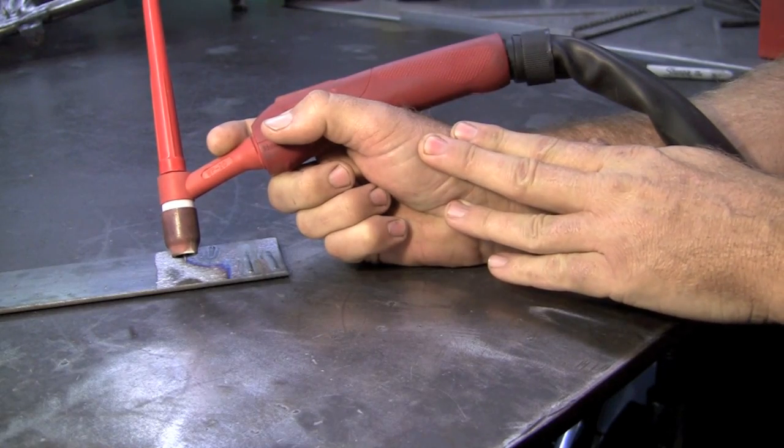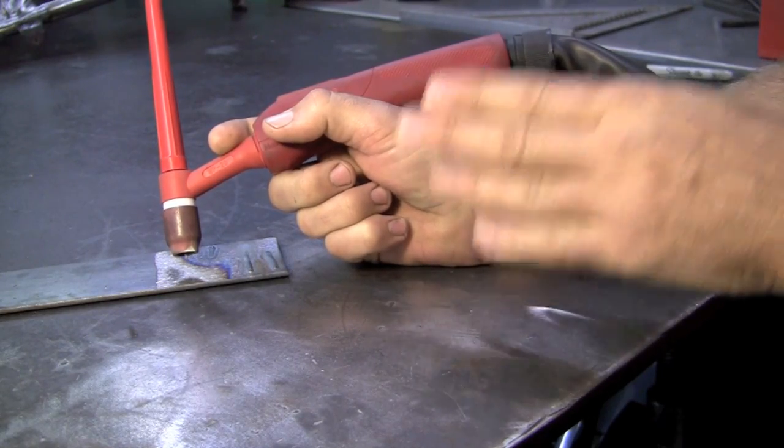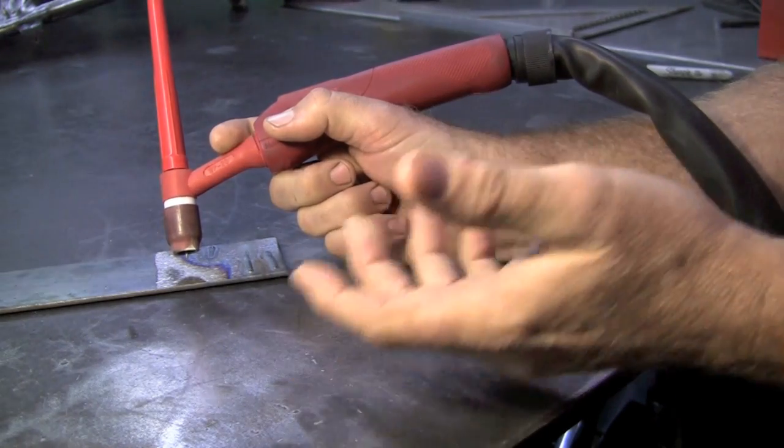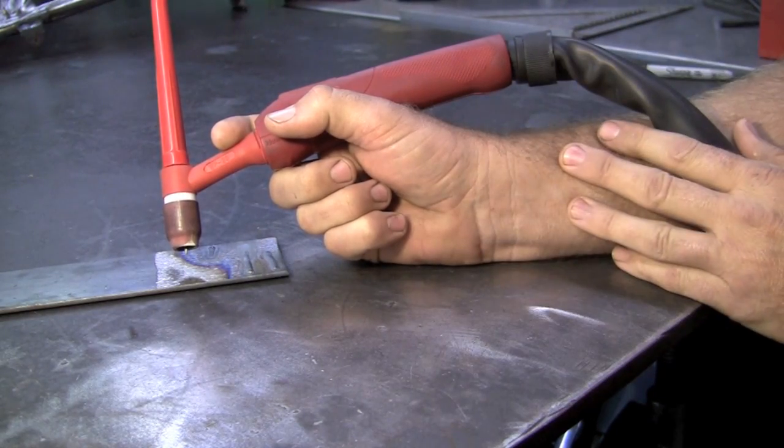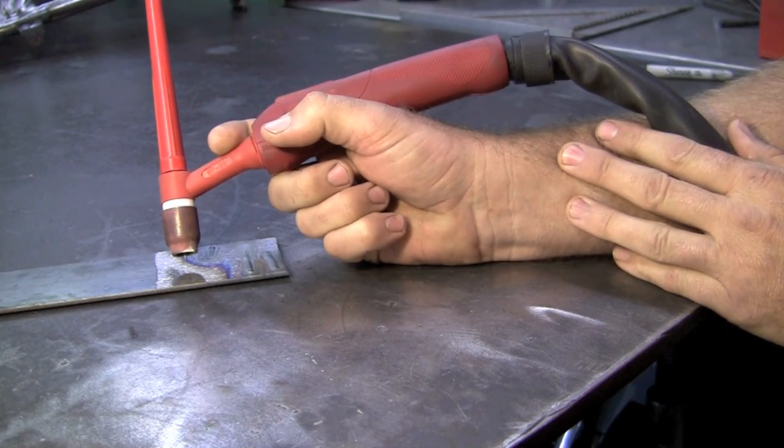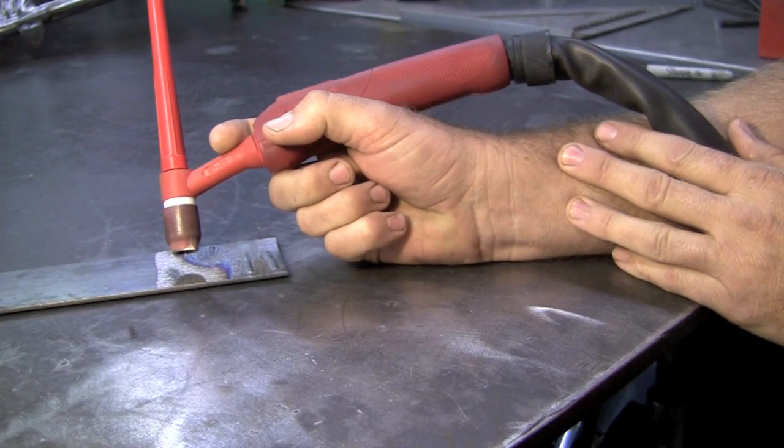I do tend to wear a glove on my right hand, the hand that I normally hold the torch with, but it is good to practice left and right hands up and down. What we're doing is just kind of getting you started right here on the table and then we'll go from there.